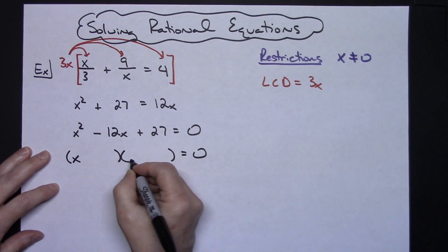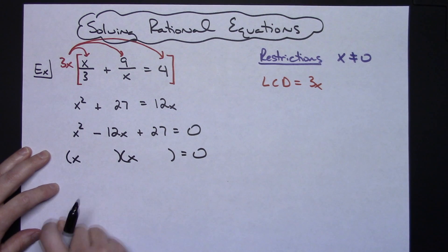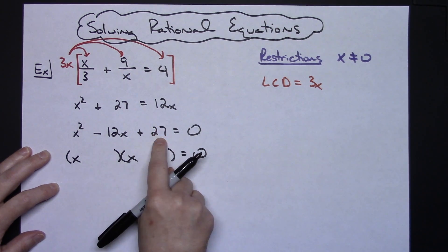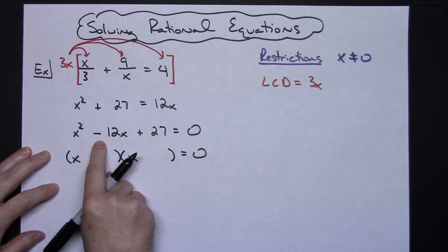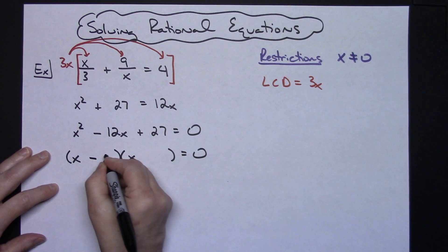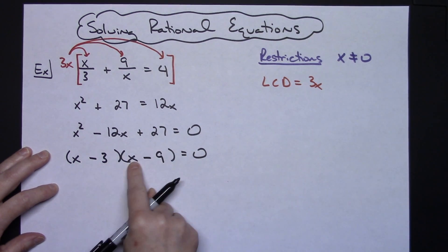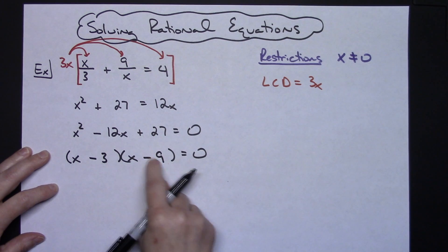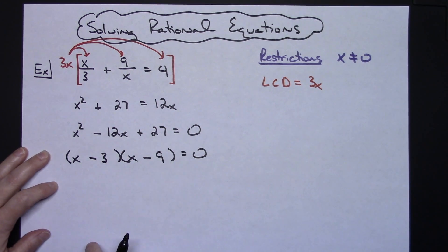So x and x would go here because x times x is going to give me that x squared. Products of 27 are 3 and 9. 3 times 9 is 27 and it needs to be positive. The middle term needs to be negative which means both of these need to be negative as well. Negative 3x and negative 9x will give me the negative 12x in the middle.